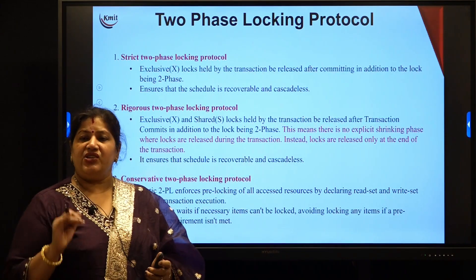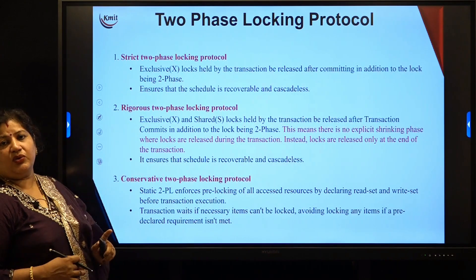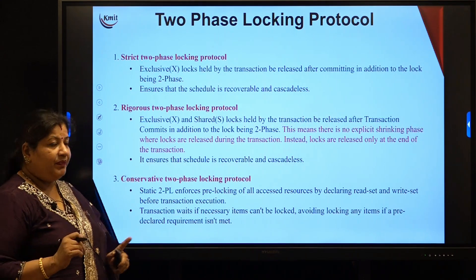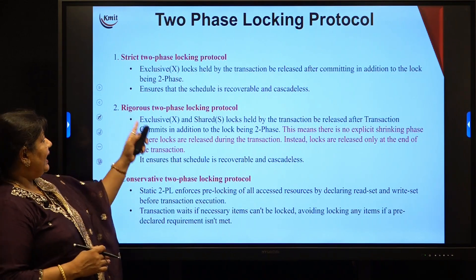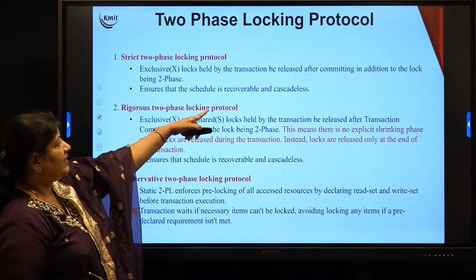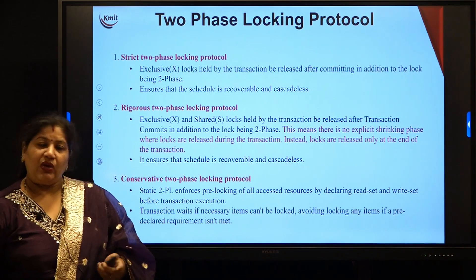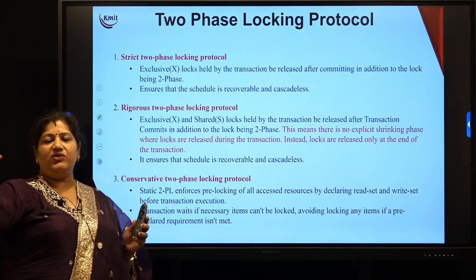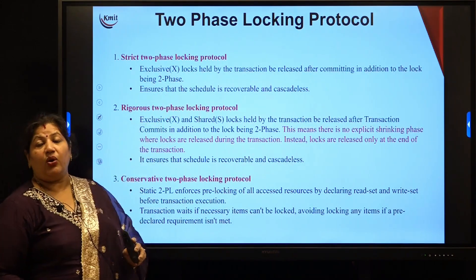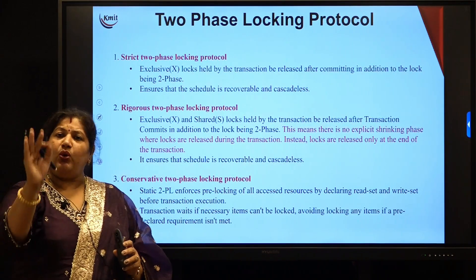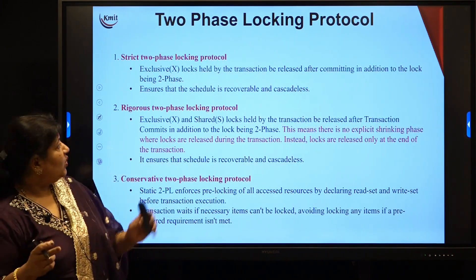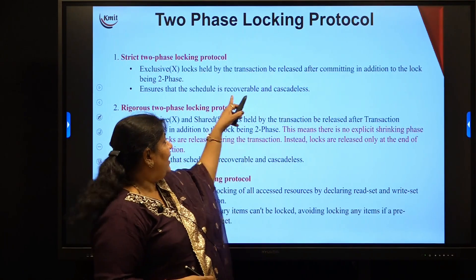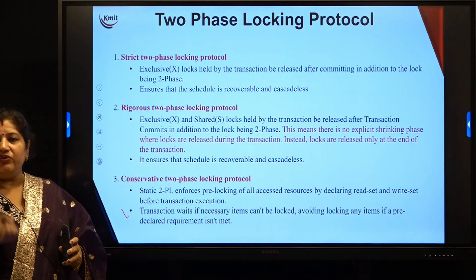There are certain variations in the two-phase locking protocol: strict two-phase locking, rigorous two-phase locking, and conservative two-phase locking. In strict two-phase locking, exclusive locks are held by the transaction and released only after committing. So in addition to the two-phase rule — all locks acquired in the growing phase and released in the shrinking phase — exclusive locks are released only after committing the data. This ensures consistency and serializability, which is why there is no cascading rollback; it is cascadeless and the schedule is recoverable.